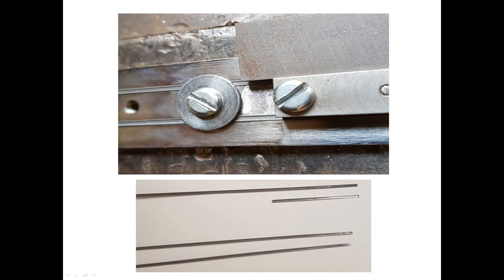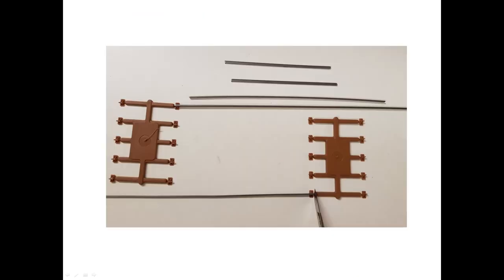Now it's time to think about assembling the component parts into a working turnout. All of mine are built using stained ply sleepers and functional chairs. But before we go any further, a couple of comments on plain track, much of which will also be relevant to turnout assembly. Thinking about the order in which to proceed before you start will make life much easier.